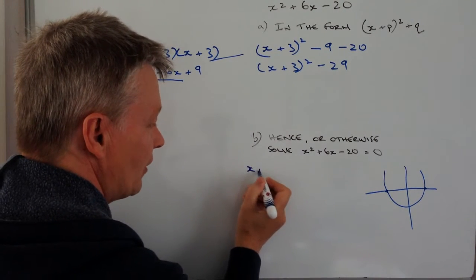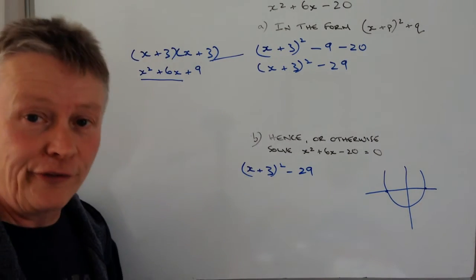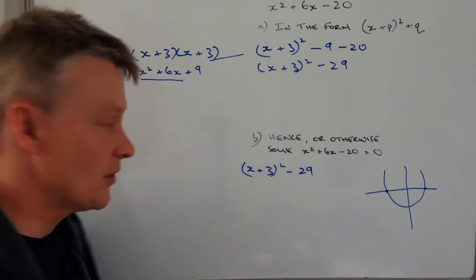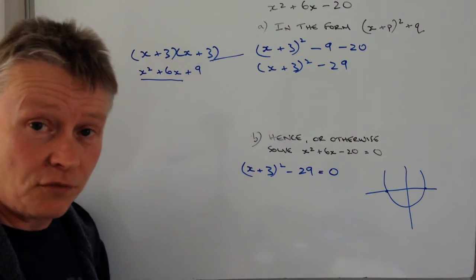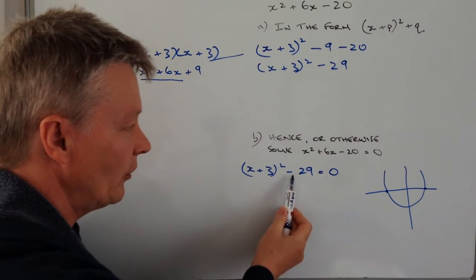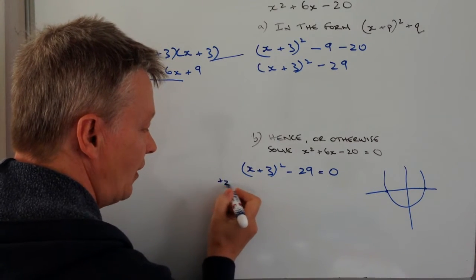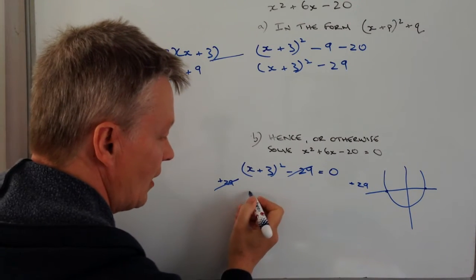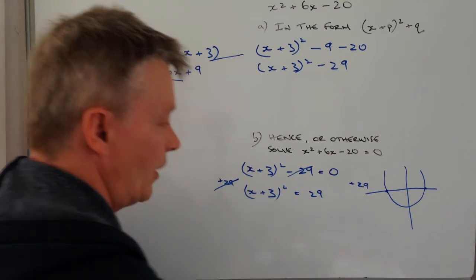So we've got (x + 3)² - 29, which is the other form, the completing the square form of this, and we're told that it equals 0. So it's now just really a case of solving this for finding the value of x. Well, I don't want the -29 there. What I'm going to do is add 29 to both sides. If I add 29 to both sides, it means this cancels out, and I get left with (x + 3)² = 29.